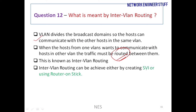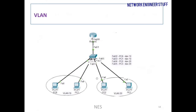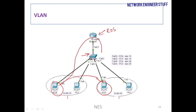Inter-VLAN routing is achieved by creating an SVI or router-on-a-stick. As shown in the diagram, this router will act as a router-on-a-stick and will make it possible that PC0 and PC2 can communicate with each other, because the traffic flows through this router to the switch to the destination PC.